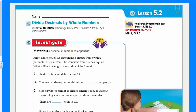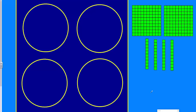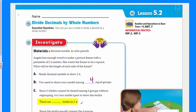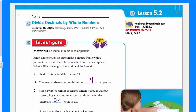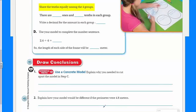So then we would be breaking it up into 4 equal groups. Since 2 wholes cannot be shared among 4 groups without regrouping, cut your model apart. You might be able to see right away that 10 tenths here is the same as 1 whole. So if I put 10 tenths, that's equal to 1. Over here, 10 tenths will also be equal to 1. So now we have 20 tenths plus our 4 tenths — now we have 24 tenths. There are blank tenths in 2.4. Well, now we know there are 24 tenths in the number 2 and 4 tenths. Share the tenths equally among the four groups.